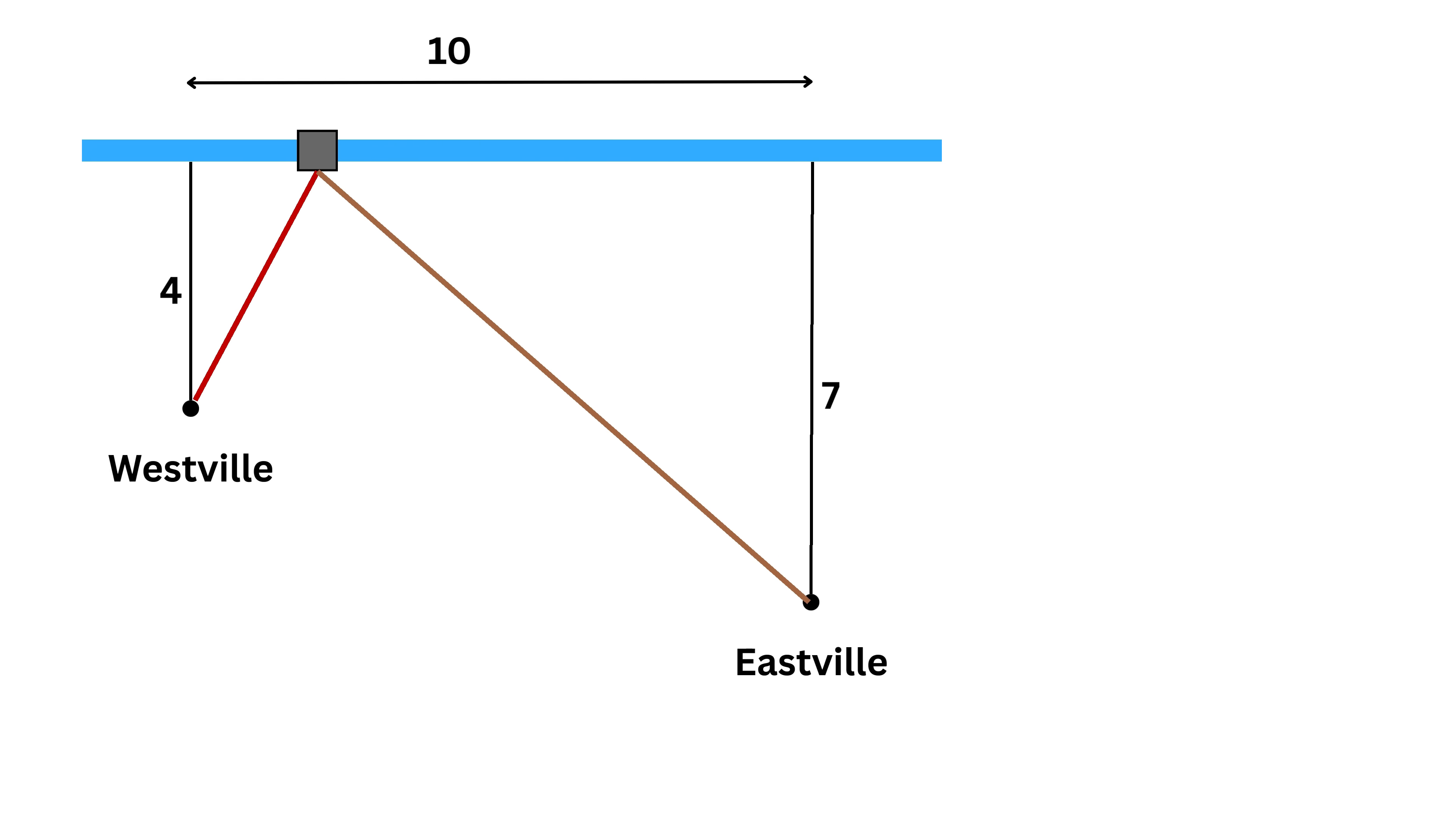Now let's try a station a bit closer to Westville, say at two miles from Westville and eight miles from Eastville. Now the pipe to Westville is square root of four squared plus two squared, which is square root of twenty, about four-point-five miles. The pipe to Eastville is square root of seven squared plus eight squared, which is square root of one-hundred-thirteen, around ten-point-six miles. Total is four-point-five plus ten-point-six, or fifteen-point-one, which is more than fifteen.